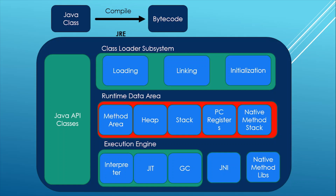Then we have the Stack. The JVM stack is used by a thread to store its local variables, and references to objects created in the heap are also stored in the stack. Next is the PC Register — it is a program counter, a register that keeps track of the current instruction executing at any moment; which specific statement is currently executing is stored in the PC register. The Native Method Stack stores similar data elements as the JVM stack and is used to help execute native or non-Java methods written in other programming languages.